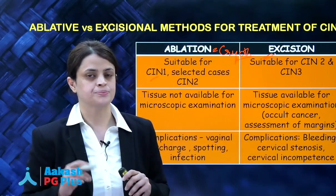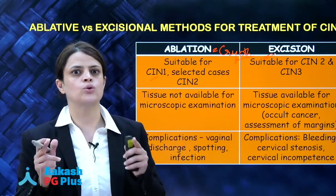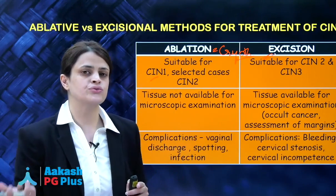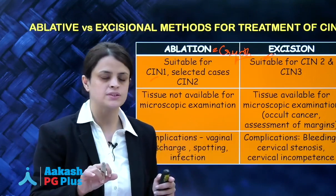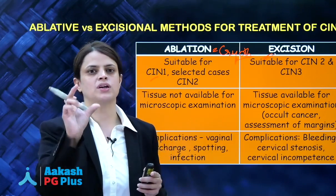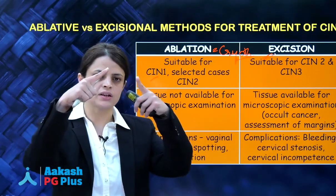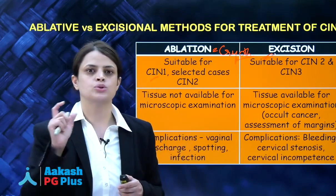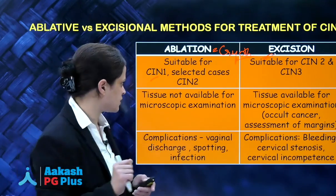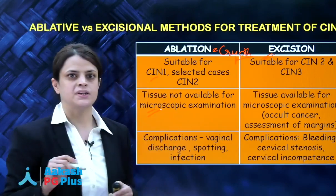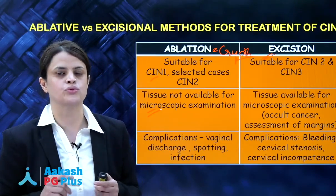Excisional procedures are superior to ablative procedures because you get a cone of cervical tissue which you can subject to histological examination to confirm the severity and diagnosis of the lesion. You can examine a bigger chunk of cervical tissue to make sure there is no hidden occult cancer, and you can examine the margins under the microscope to confirm the disease has been removed in its entirety to decrease recurrences. With ablative methods, you are only destroying the abnormal cells without histological proof of the extent of destruction.